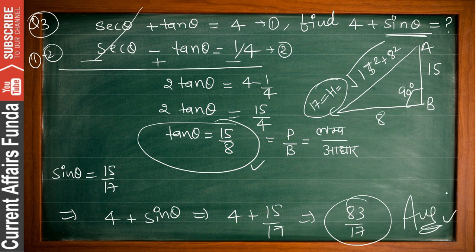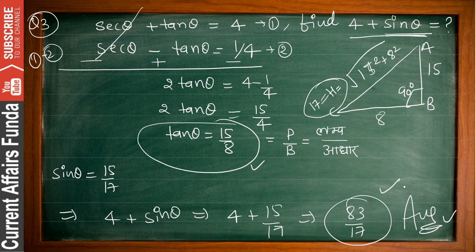In this question, tan θ = 15/8. We used the right triangle with sides 15, 8, and hypotenuse 17, since 15² + 8² = 225 + 64 = 289 = 17². So sin θ = 15/17, and putting it into 4 + sin θ gives 83/17. This is the correct answer. I hope you understand.